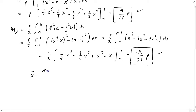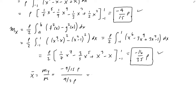x̄ is the moment about y divided by the total mass. So we get minus 4/15 times rho divided by 4/3 rho, which gives us minus 1/5. Notice the rho values cancel out, because we're assuming this plate has constant density — hence the term planar lamina.